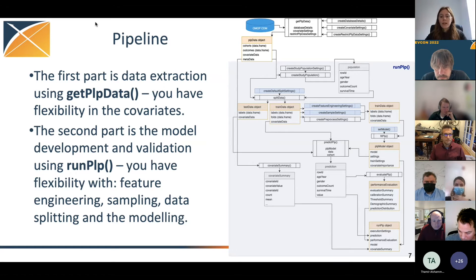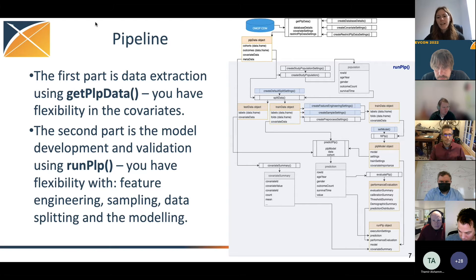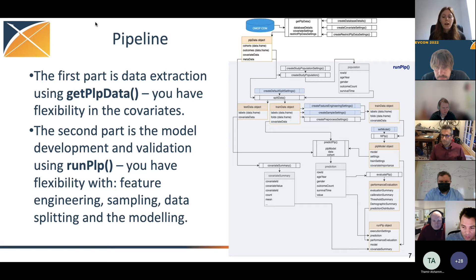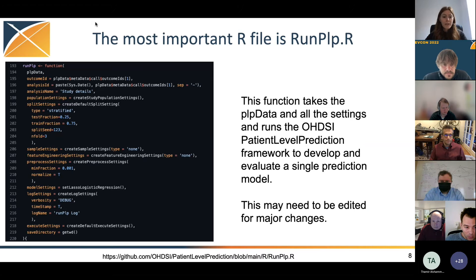We also have descriptive summaries of the data showing how often each feature occurred for different sets. The final output of running PLP is a list containing execution settings, the prediction object with predicted risk for each person, performance evaluation metrics like AUROC and calibration, the model itself for applying to new data, and information about feature occurrence. This whole pipeline is defined in the runPlp.r file in the R folder — that's the one that tells you the structure and the order of each step.